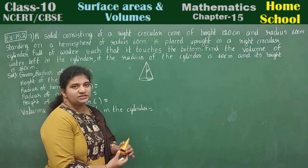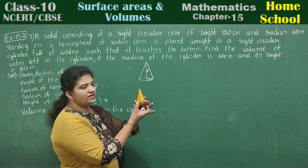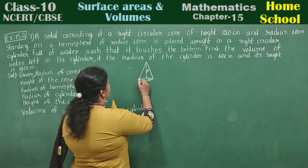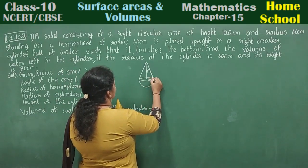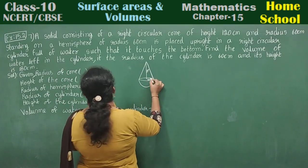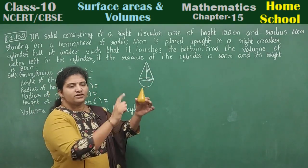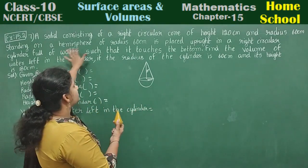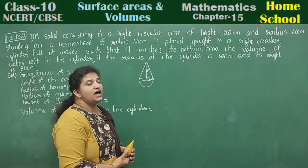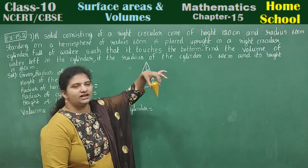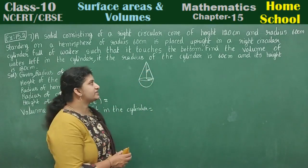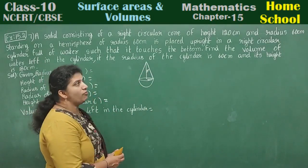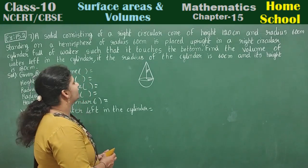This cone is standing on a hemisphere of radius 60 centimetres. The hemisphere is placed upright in a right circular cylinder full of water such that it touches the bottom. Find the volume of water left in the cylinder if the radius of the cylinder is 60 centimetres and its height is 180 centimetres.